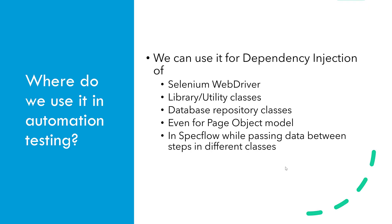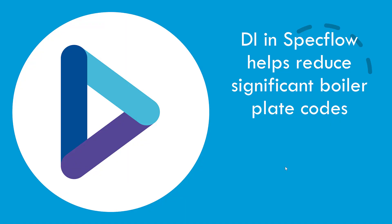The next question is: where do we use DI in our automation testing? We can use DI in Selenium WebDriver, library utility classes, database repository classes, and even for the page object model class. In SpecFlow, while we try to pass data between steps in different classes we can use DI. DI can be used in almost all places in our automation code — it is a best practice pattern to avoid boilerplate code, increase readability, maintainability, and make our test code follow separation of concerns, so we don't have to worry about initializing the WebDriver object manually.